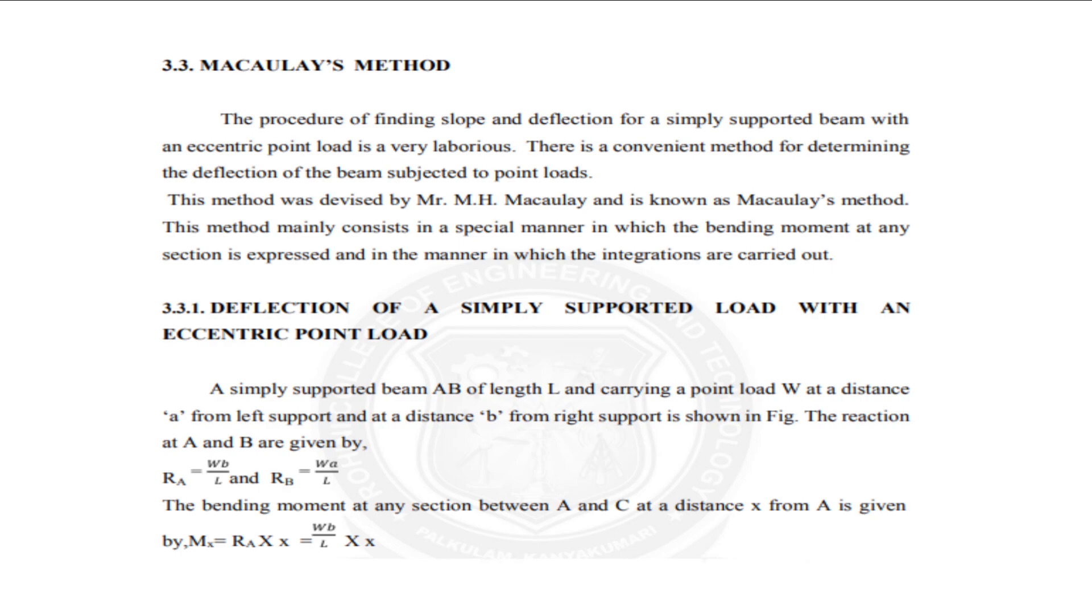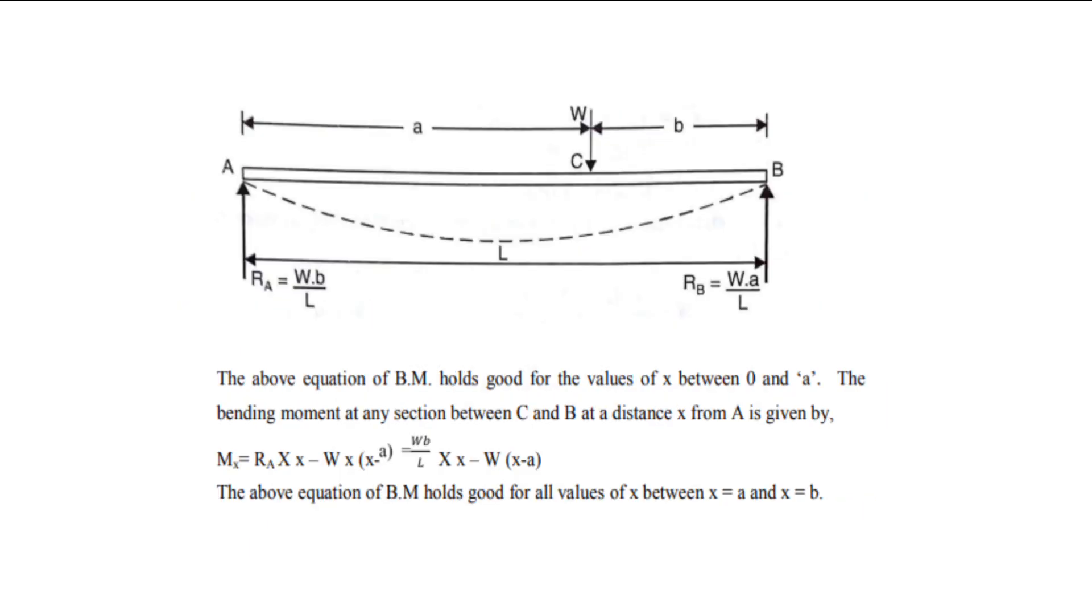Deflection of a simply supported load with an eccentric point load. A simply supported beam AB of length L carrying a point load W at a distance A from left support and at distance B from right support. The reaction at A and B are given by RA equals WB by L and RB equals WA by L. The bending moment at any section between A and C at a distance X from A is given by Mx equals RA into X equals WB by L into X. So this is the diagram for the reactions you have to find by using Macaulay's methods.